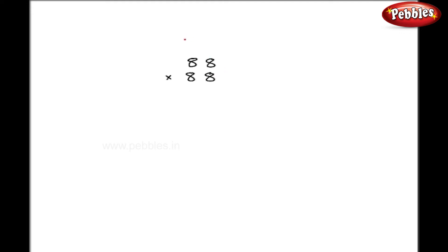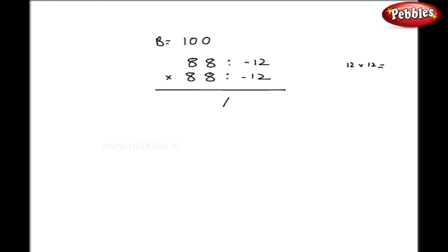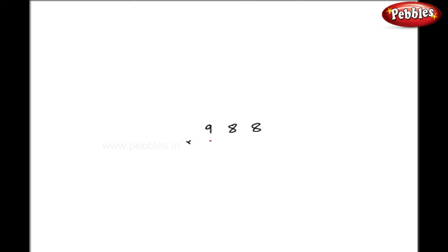Now let us take one more example: 88 into 88. Here again the base is 100. This is an example of the square of 88. So I have minus 12 and minus 12, so my multiplication is 144 on the right hand side. But now I have 3 digits in the answer on the right hand side and only 2 zeros in the base. So I write 144 as 1 and 44. On the left hand side I do 88 minus 12, that is 76. Now this 1 will be added to the left hand side, so my answer is 7744. So 88 squared is 7744.